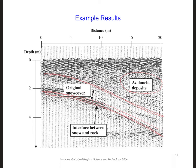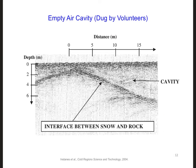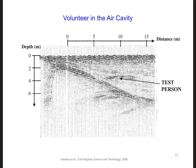Since this was an early test of a radar system for detecting people, they took the time to dig caves at different depths in the snowpack and put volunteers inside of those caves in order to test how easy it would be to detect the presence of a person in the snow. This figure shows the result for an area that has an empty cave — they're calling it a cavity. Here is the result for the same cave or cavity, but with a volunteer inside of it. There is a clear difference in the radar image when there is a person in the cavity versus no person.